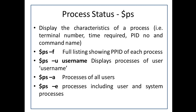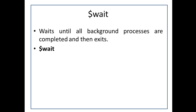The options for the PS command we will study are: PS -f, which gives the full listing showing the PPID (Parent Process Identification Number) of each process; PS -u username, which displays the processes of the specified user; PS -a, which displays the processes of all users; and PS -e, which displays processes including both user and system processes.